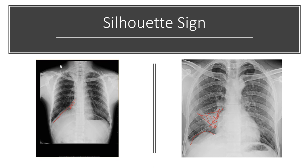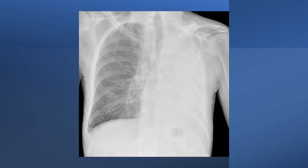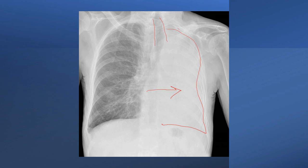By following the silhouette sign, you can localize lesions anatomically. In one example, there is homogeneous opacity on the left side, the heart is pulled towards the left, and there is tracheal deviation to the left — indicating significant volume loss and left lung collapse. If you look carefully, you can sometimes see a bronchus cutoff sign suggestive of a tumor on the left main bronchus.